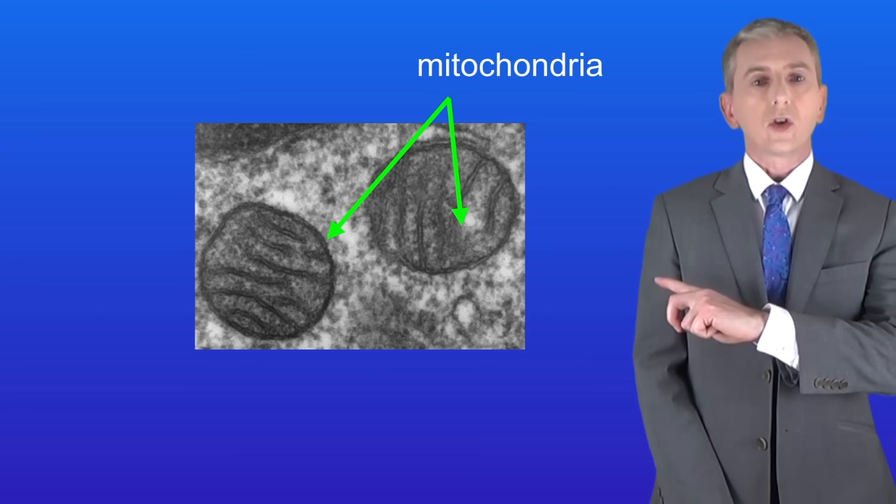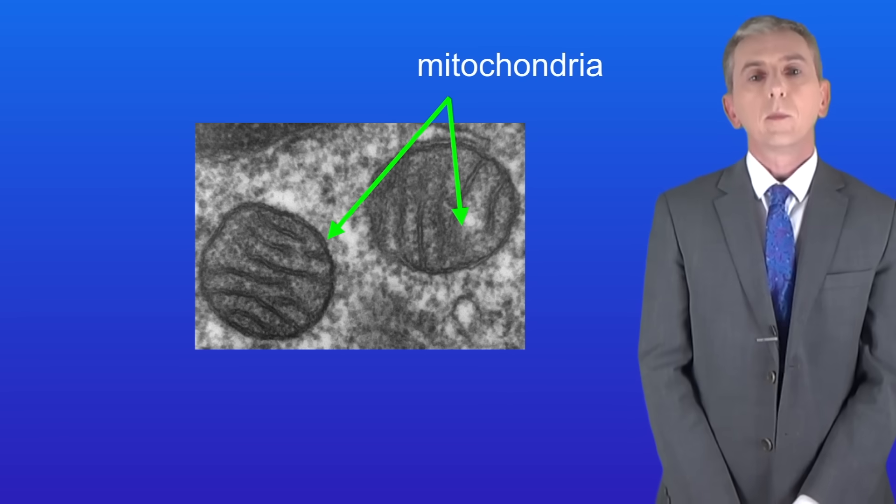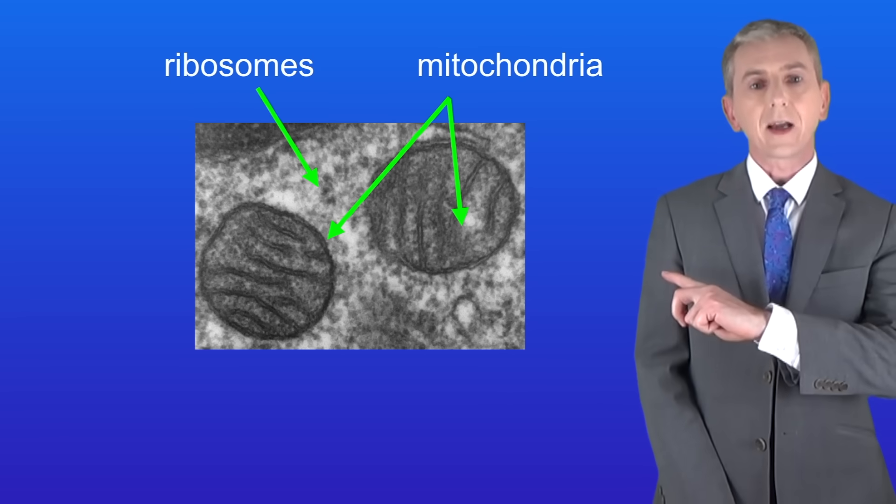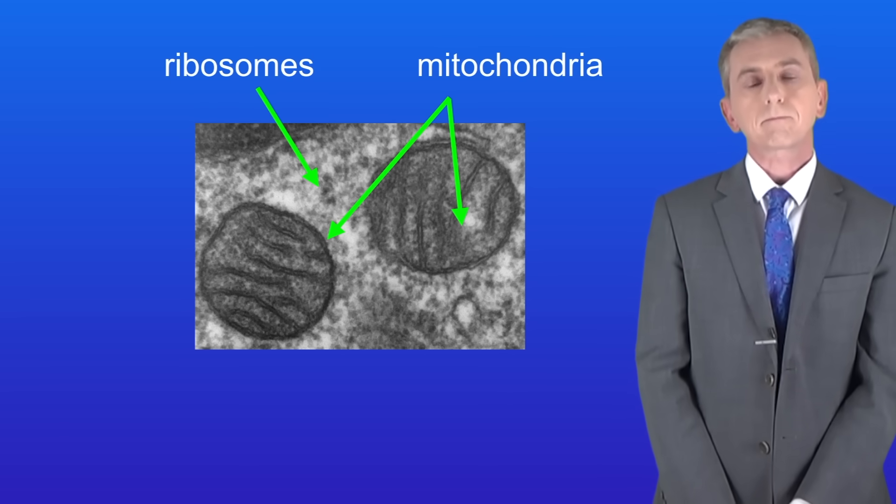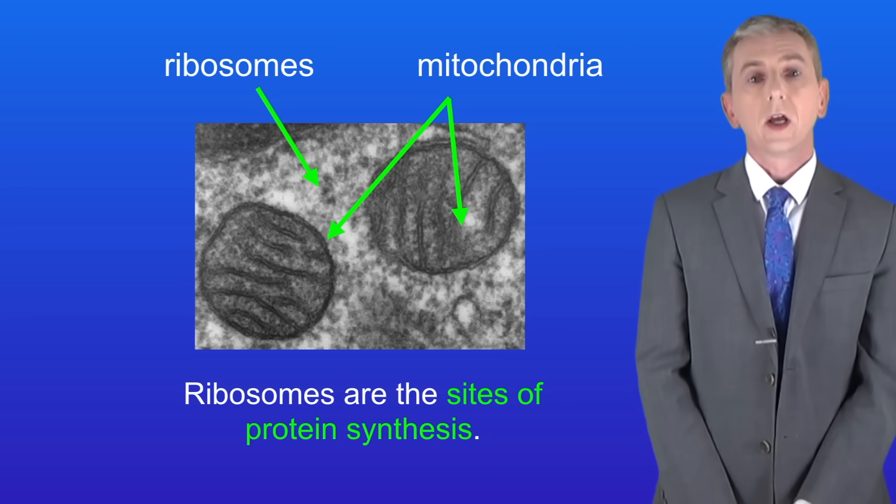So this is an image using an electron microscope and we can see two mitochondria. But if you look closely at these tiny flecks, these are ribosomes. Now ribosomes are the sites of protein synthesis. Proteins are really important and they carry out lots of functions in cells, for example enzymes.